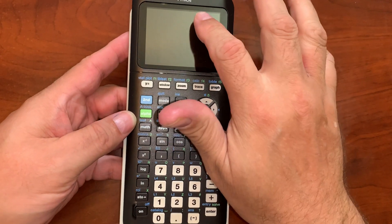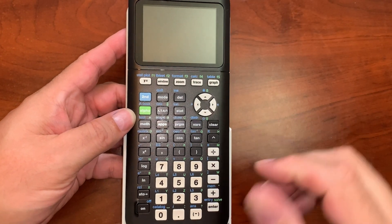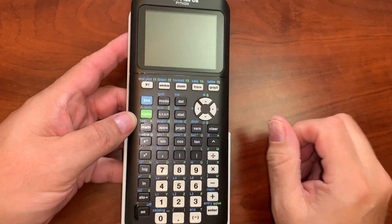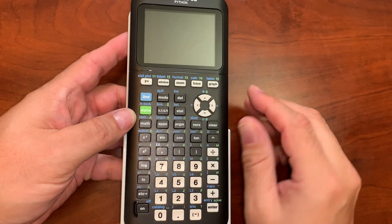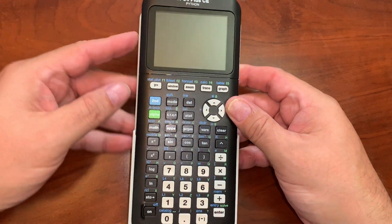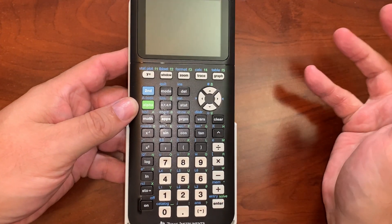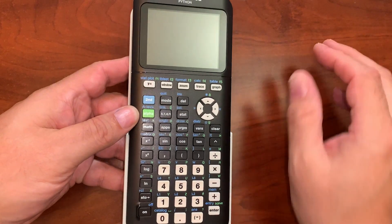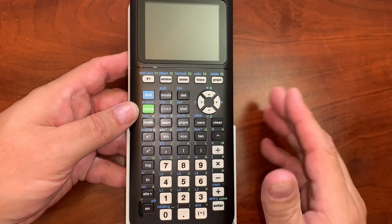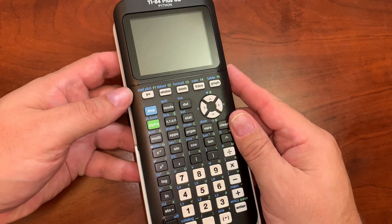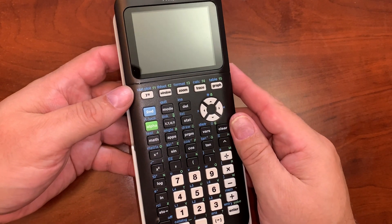Here it is, the TI-84 Plus CE. This is the actual color edition, but this also is the Python edition, which means this could actually help you in data science or if you're taking a class in high school that uses Python. They're teaching programming as young as middle school now, so this calculator you could probably use for the next however many years you have left in school and then some, or that your kids have.